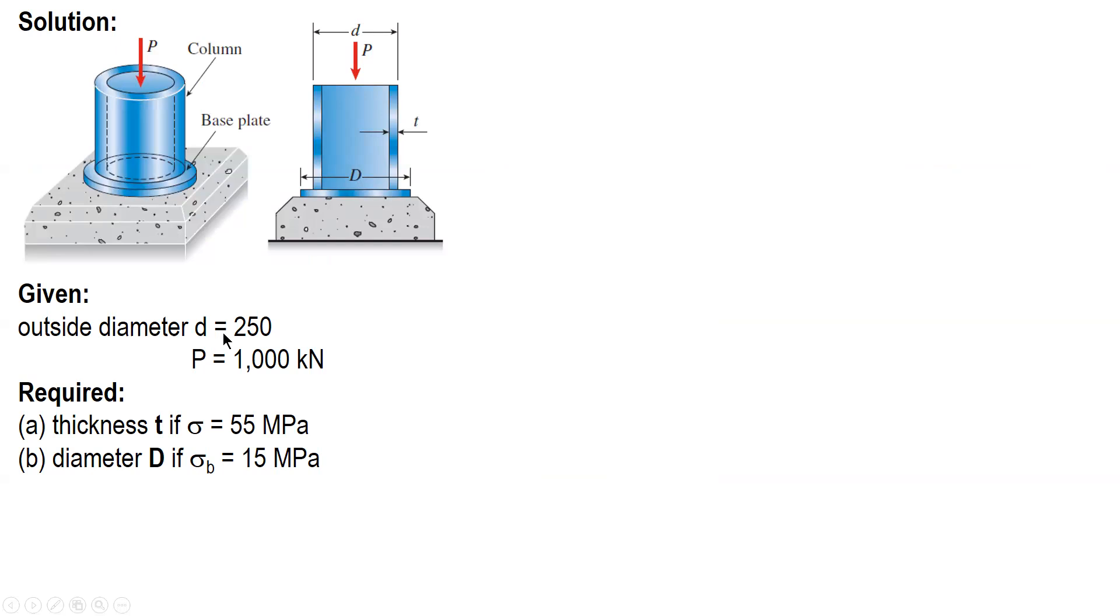So given quantities: outside diameter of the steel column 250, and then the applied load P 1,000 kilonewtons. Letter A: find the required thickness of the steel column given that the allowable stress is 55 MPa.